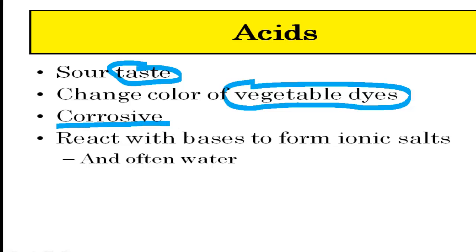Acids are corrosive, meaning they eat through things. If you drink too much soda like Coke or Pepsi, they contain carbonic acid, which actually eats through the enamel on your teeth. Corrosive means it eats through things — like the material you see on the outside of old batteries.